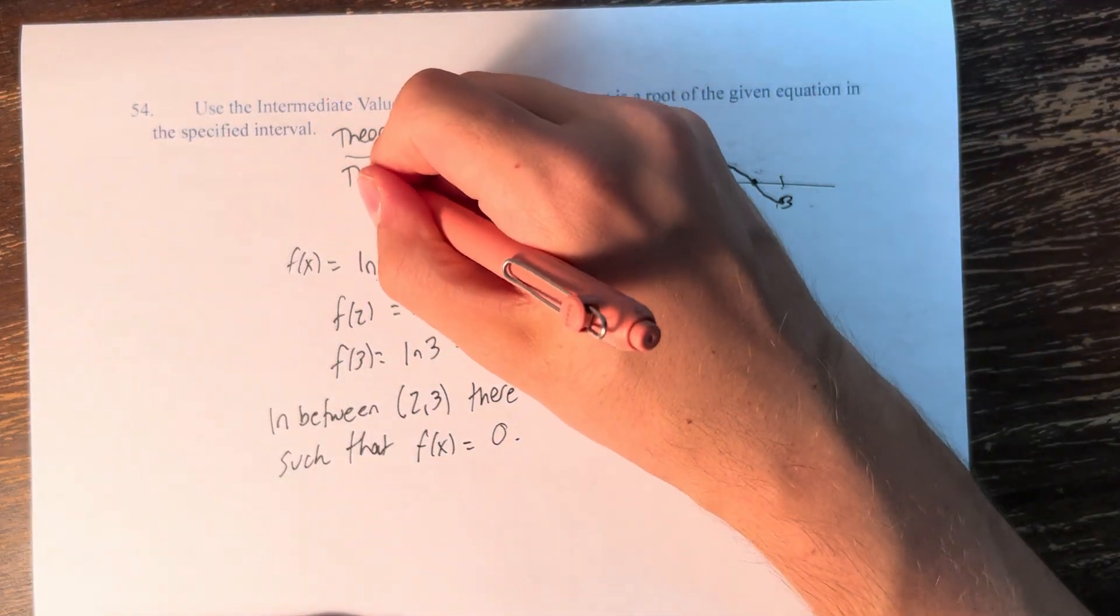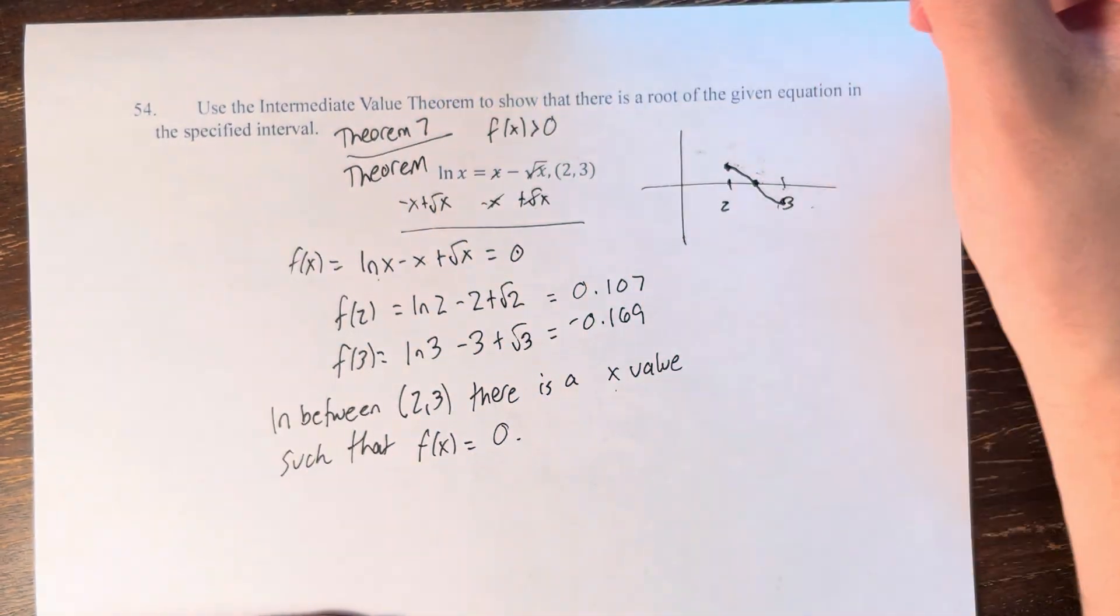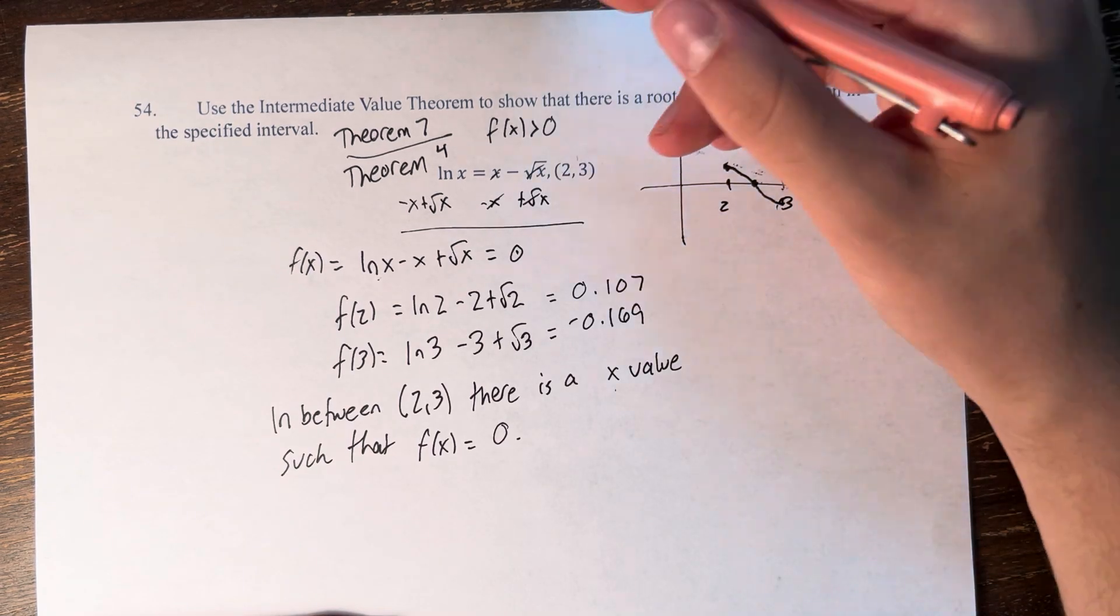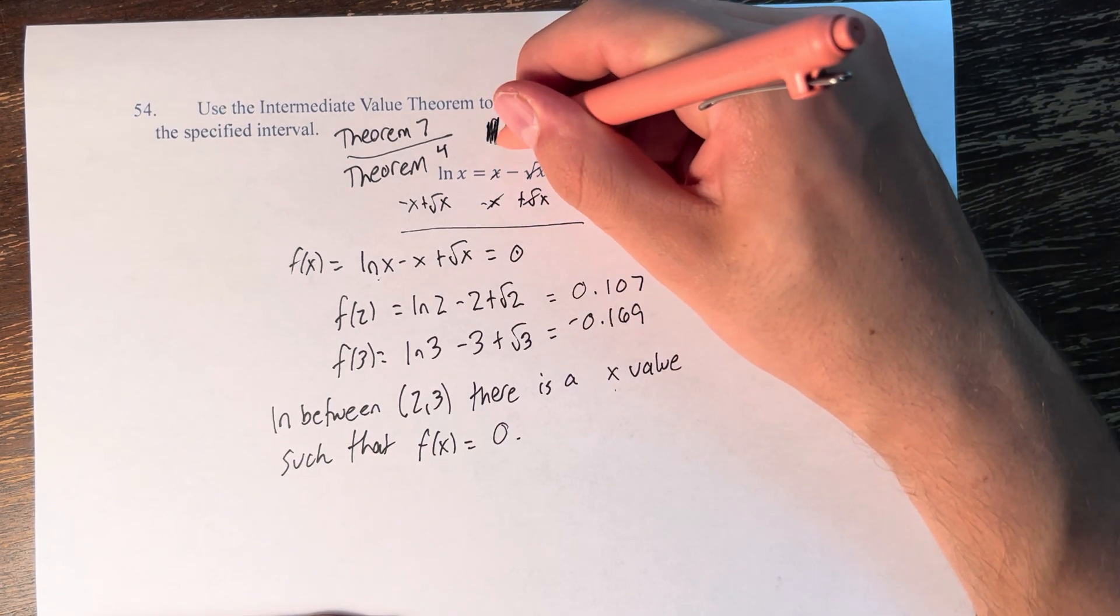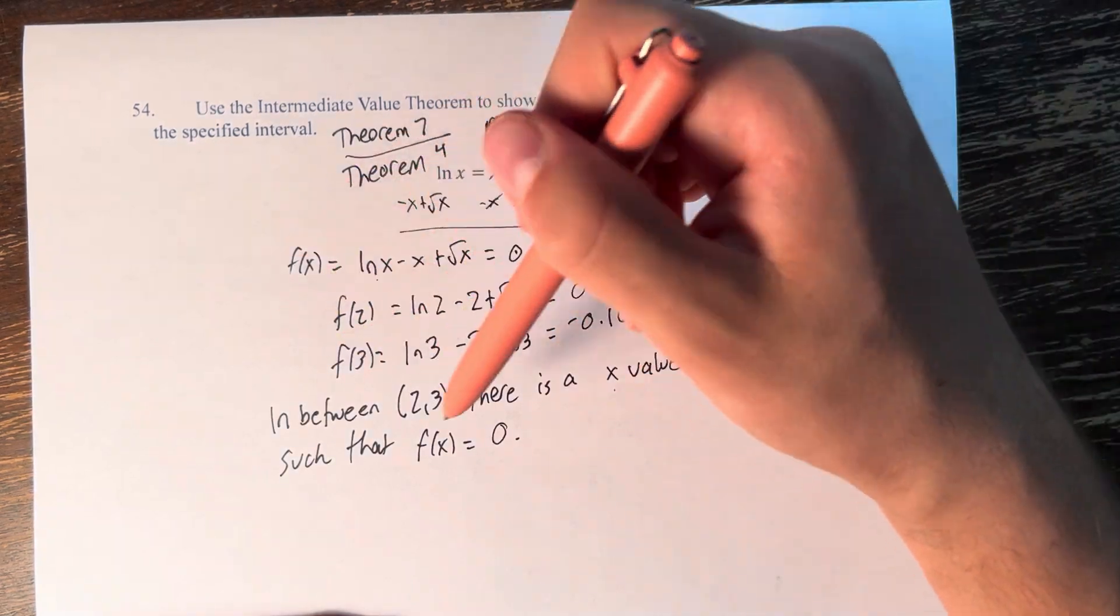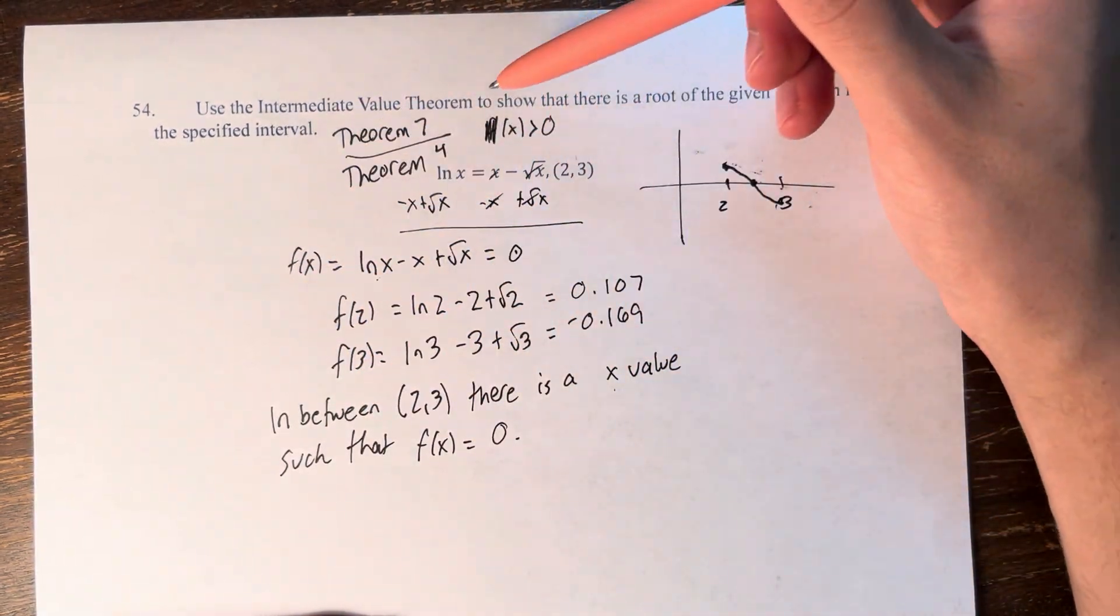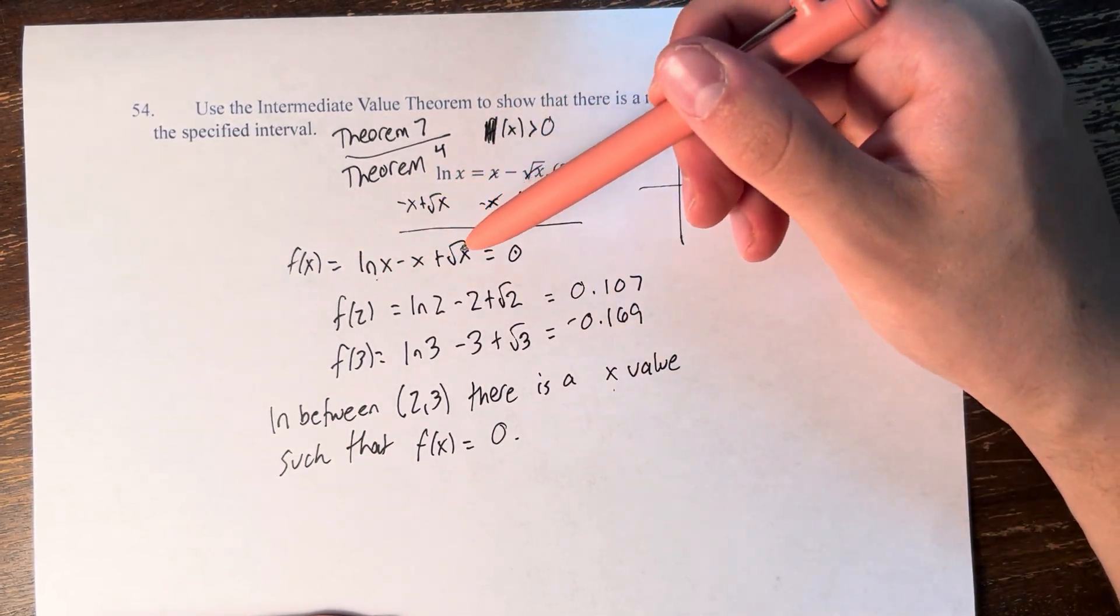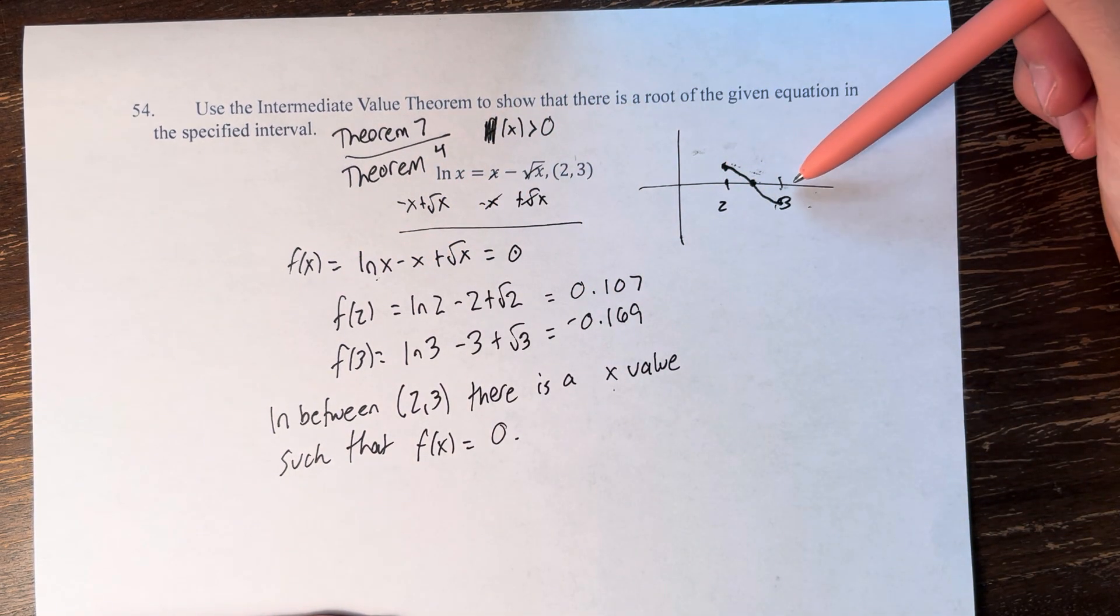Based on Theorem 4, if all of them individually are defined when x > 0, then Theorem 4 states that their sum and difference is going to be continuous when x > 0. Therefore, this function ln x - x + √x is continuous from 2 to 3.